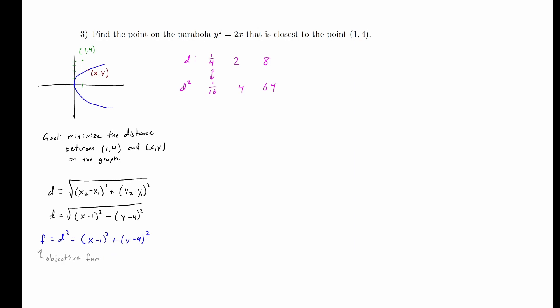So our function to minimize is distance squared equals (x minus 1) squared plus (y minus 4) squared. To eliminate a variable, we use the fact that the point (x, y) lies on the parabola, so y squared equals 2x. Solving for x gives x equals one-half y squared. We replace x with one-half y squared in the objective function.